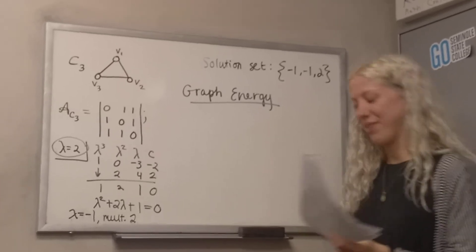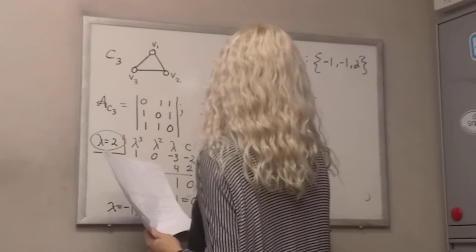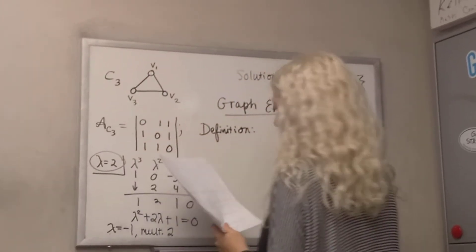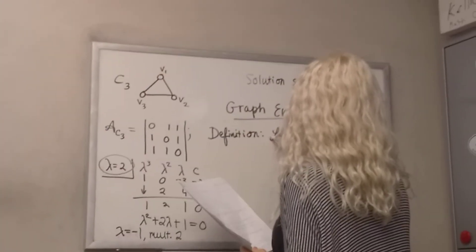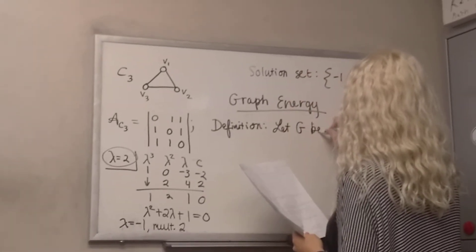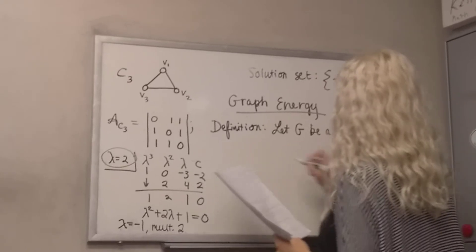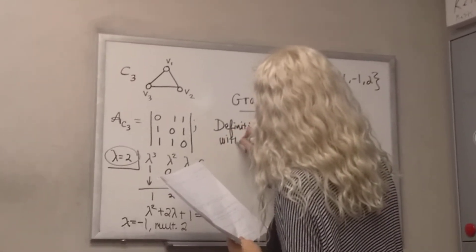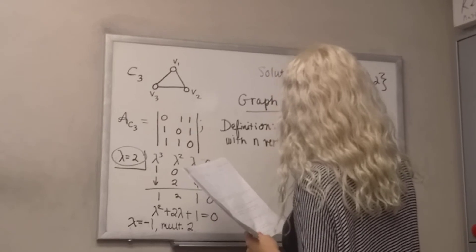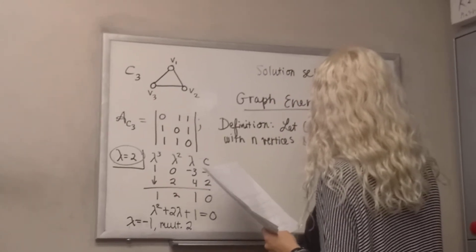Getting into this idea of graph energy. So here is a definition. I want G to be a graph with n vertices and edges.